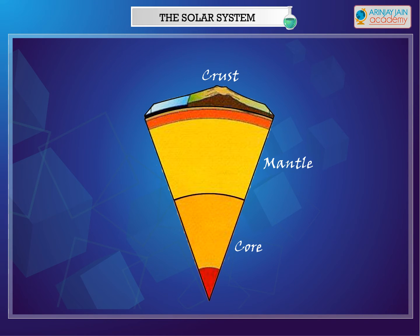The innermost layer of the Earth is known as the core. It is made up of dense minerals, mainly iron and nickel. The core has a solid inner core and a molten outer core.